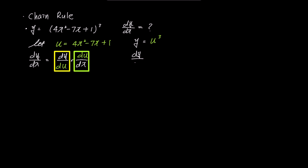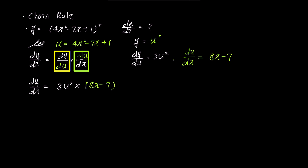Let's first find dy/du. If we differentiate y with respect to u, it becomes 3u². And when we differentiate u with respect to x, it becomes 8x − 7. Now let's multiply these two to write dy/dx: dy/dx is 3u² times (8x − 7). If we replace u with the expression 4x² − 7x + 1, it becomes 3(4x² − 7x + 1)² times (8x − 7).